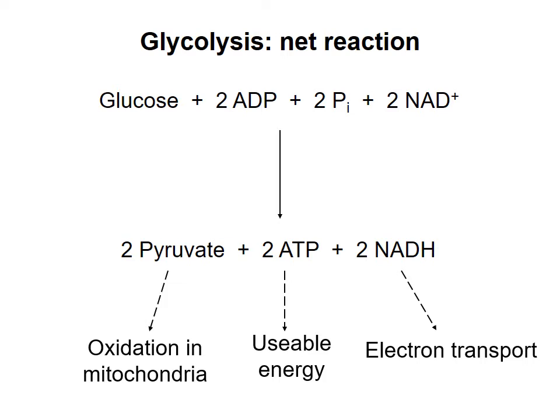One thing to note is that other monosaccharides, such as galactose or fructose, can be converted to intermediates in glycolysis. So we can get these products — pyruvate, ATP, and NADH — from other monosaccharides, not just from glucose.